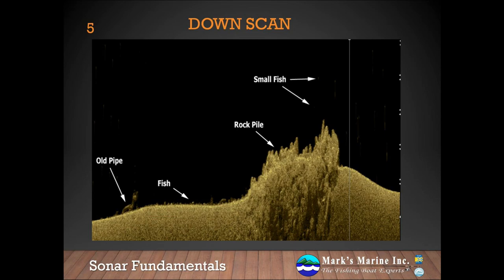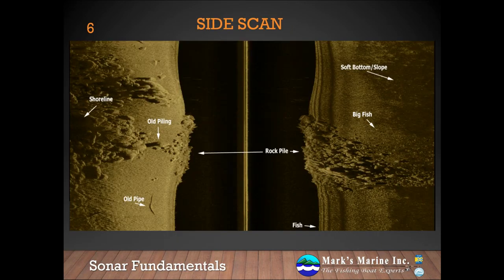Finally, we're looking at the same object in sidescan, and now we really get a good idea of what's going on under the boat. We also see some objects we missed with the previous views. It's much harder to see the small fish, but we can still see the bass on the bottom as we pass right over it. We can see several fish further out to the side we would have missed otherwise, and get a general idea of the hardness or slope of the ground to either side of the vessel. We can clearly see the old pipe, as well as an old piling that was hiding behind the shadow of the rock pile.